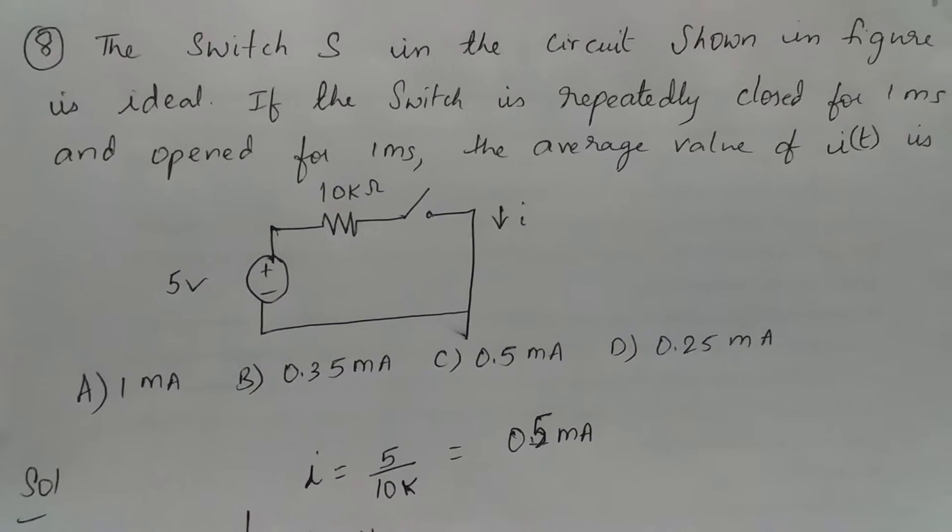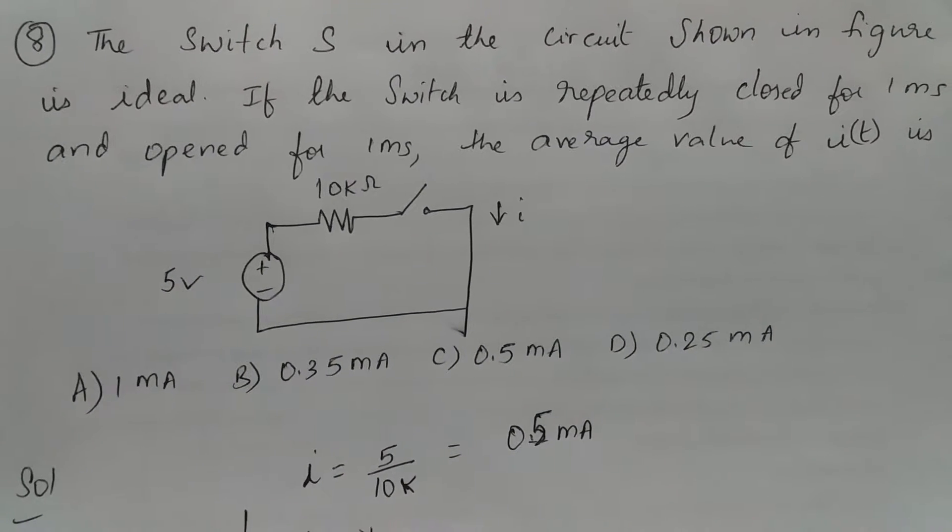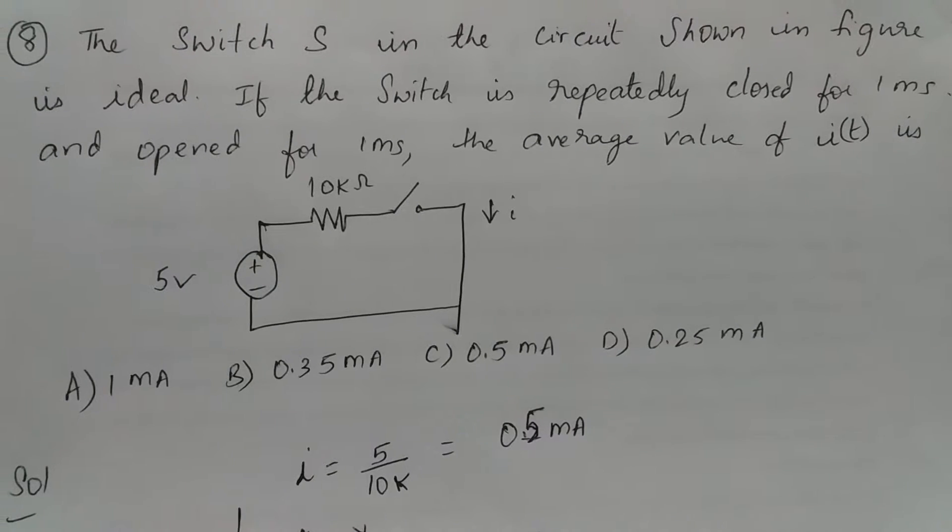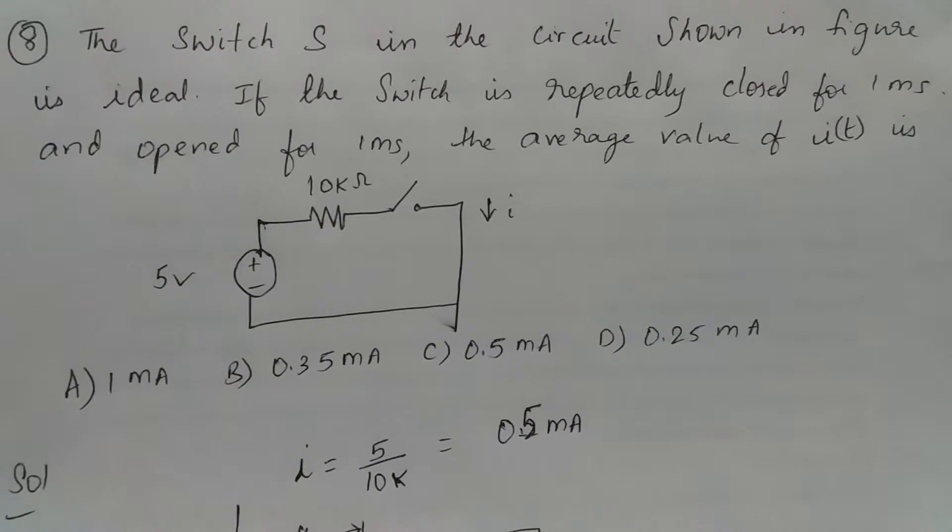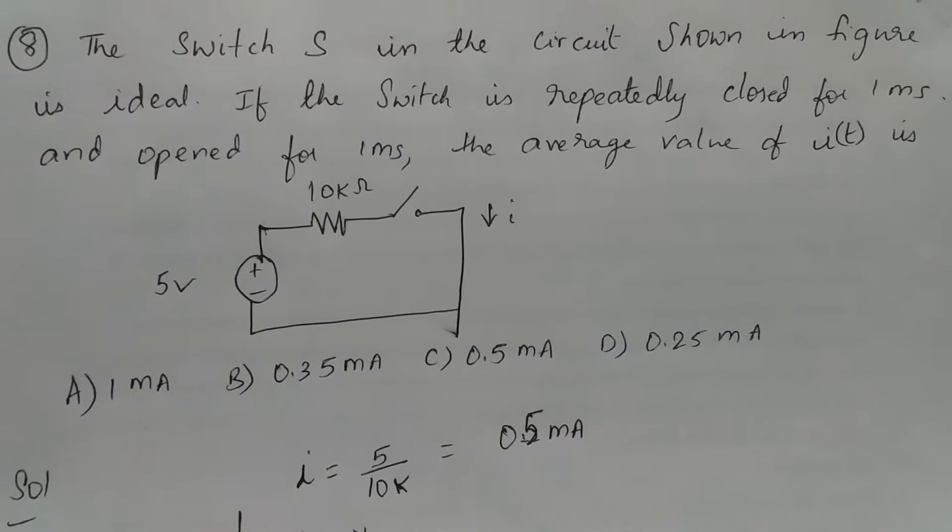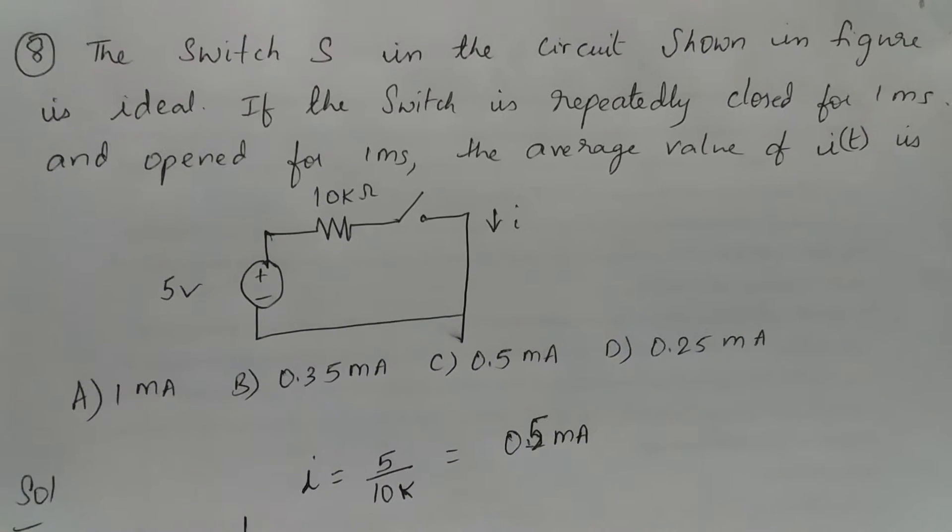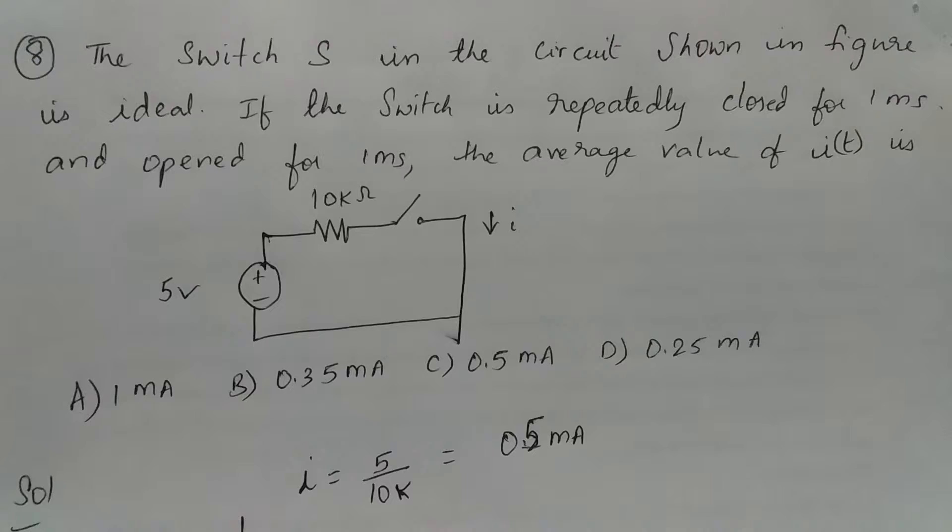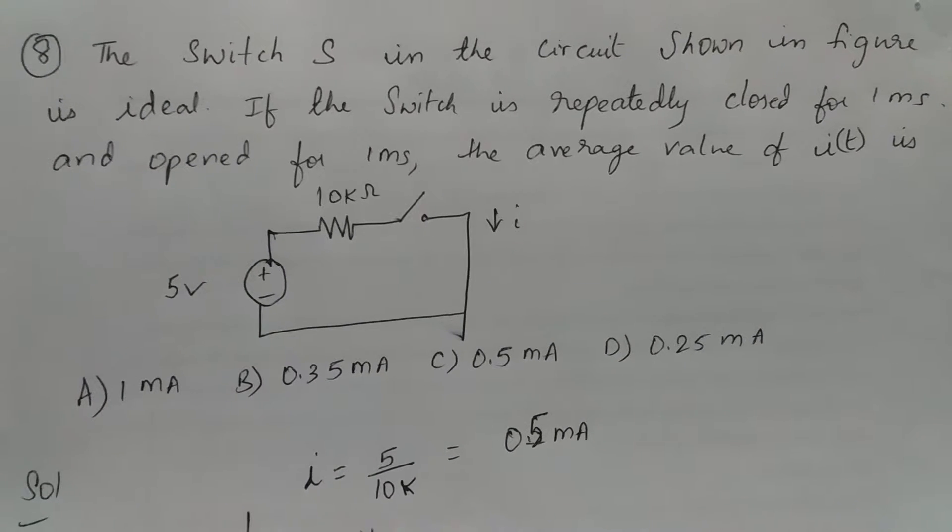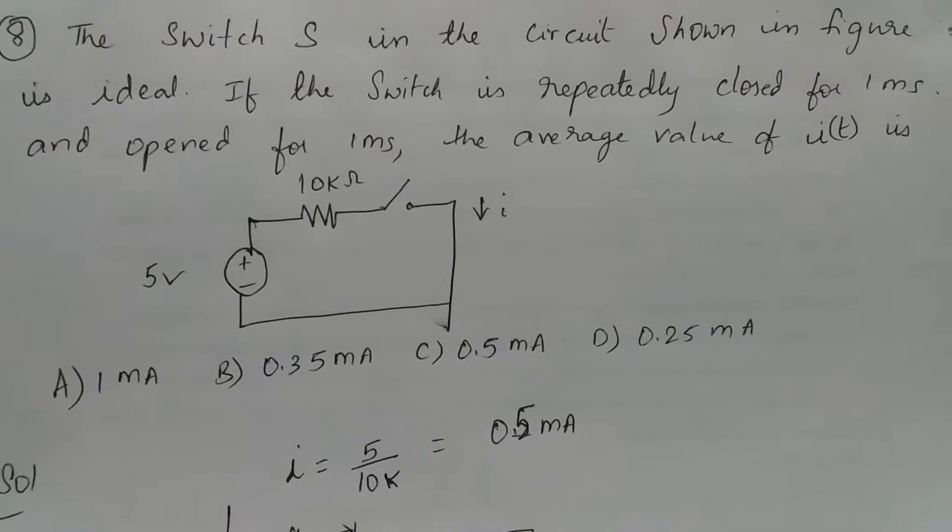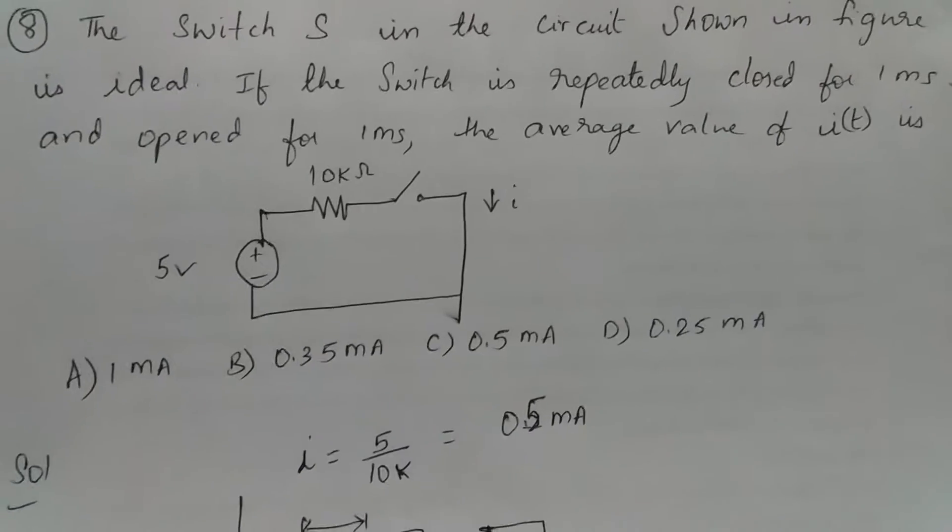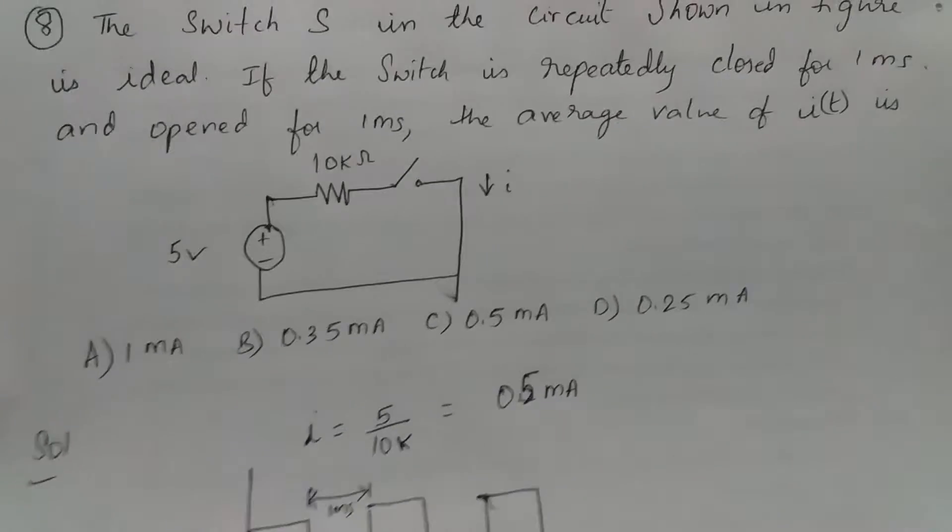Welcome to BVS Prakati channel. In this session, let's have a look at some multiple choice questions related to network systems. The switch in the circuit shown in figure is ideal. If the switch is repeatedly closed for 1 millisecond and open for 1 millisecond, what is the average value of I?